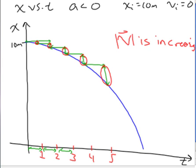Let's correct that. The magnitude of the velocity is increasing, or in other words, speed getting larger in negative direction.